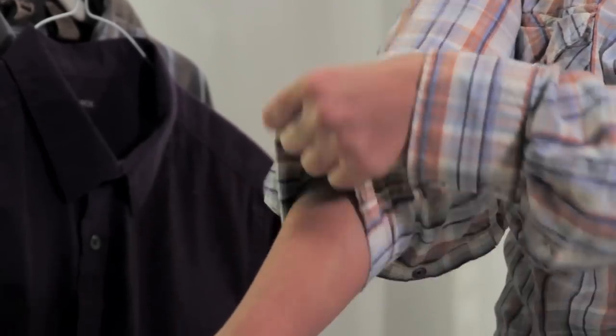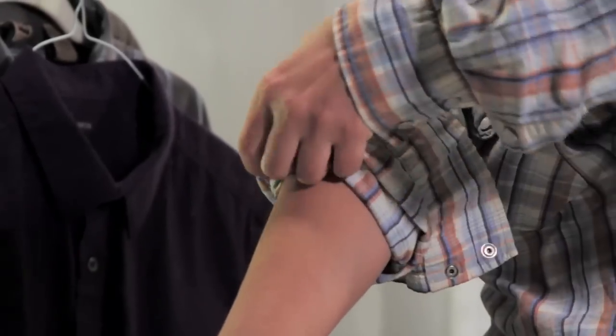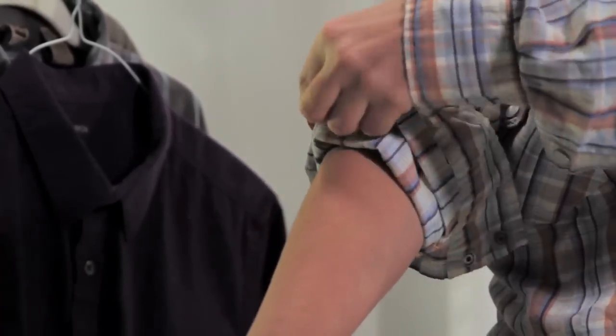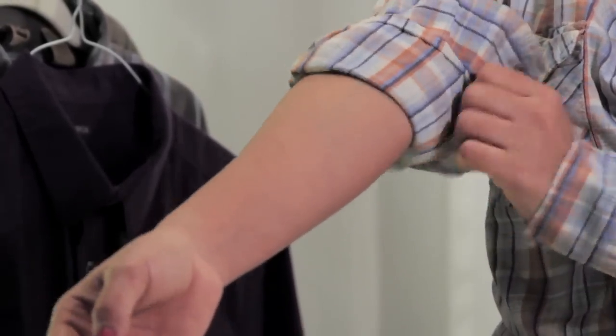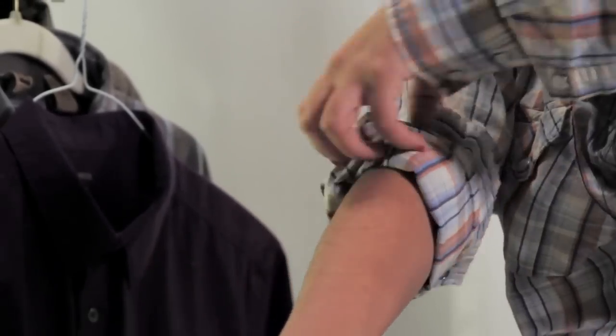At this point you're going to take the bottom of the sleeve where the fold is and you're going to fold that up one more time. And this fold is going to come up just a little bit above that seam line of the cuff so you don't see the seam.